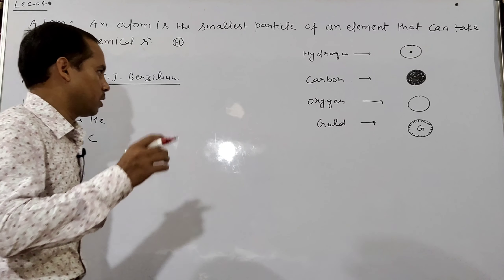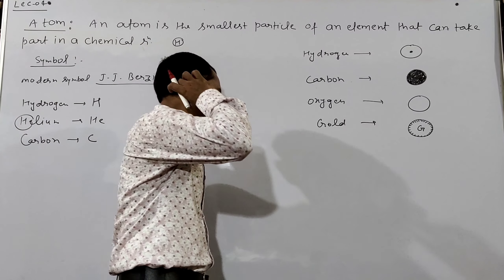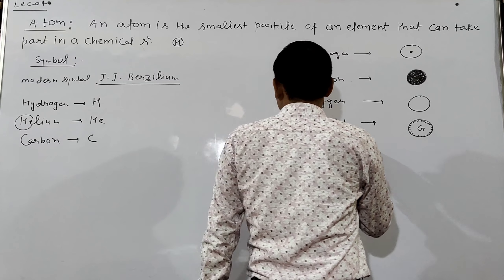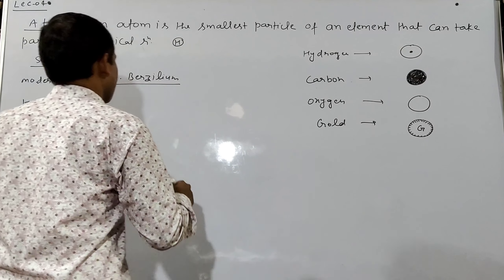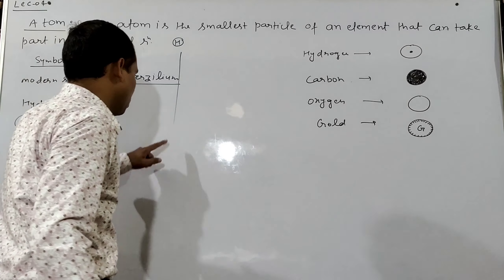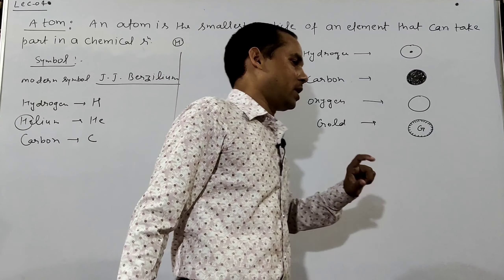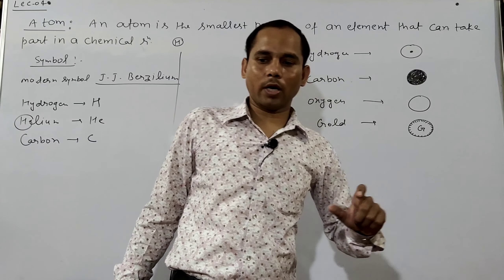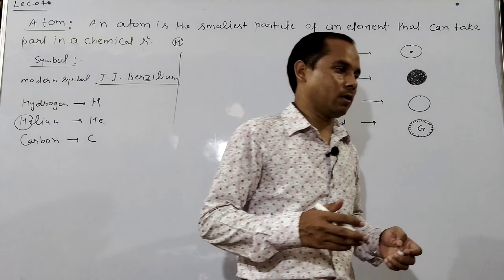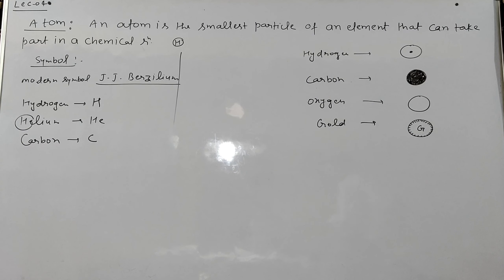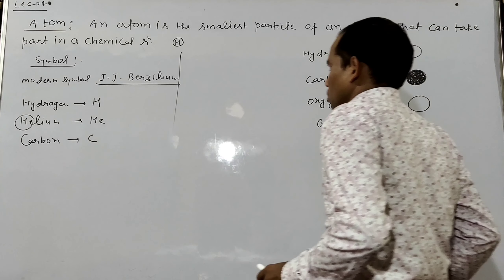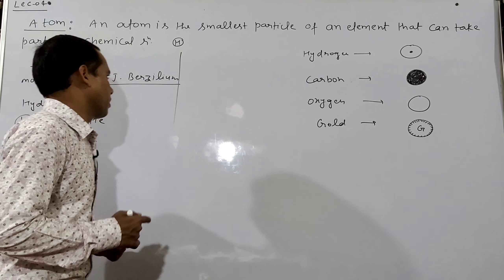Later on, there were some elements whose symbols were not from their English names. Some elements had Latin names, and their symbols were derived from those Latin names. For example, let us take sodium.